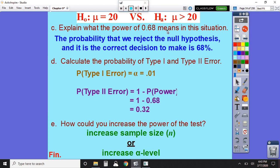All right. Explain what the power of 68% means in this situation. So again, power just means the probability that we reject the null hypothesis and it was the correct decision to make. And that's just another definition that you're going to have to store in your brain for future reference. So again, I'm just basically stating what that definition was. The probability that we reject the null hypothesis and it was the correct decision to make. That there is a 68% chance that that will occur. And again, don't fret about how did I get this 68%. How do we calculate that number? Don't worry about it.